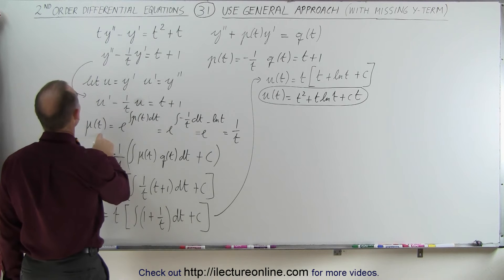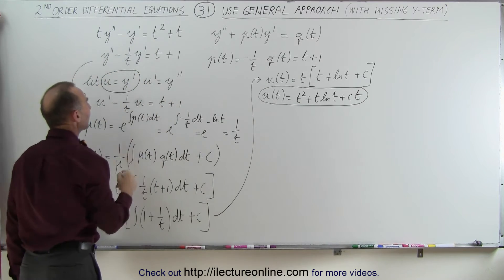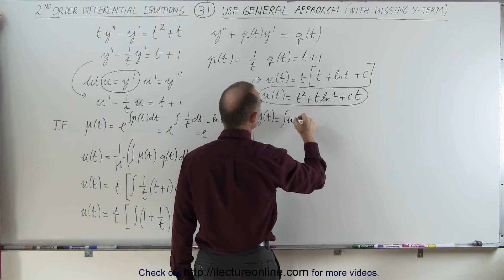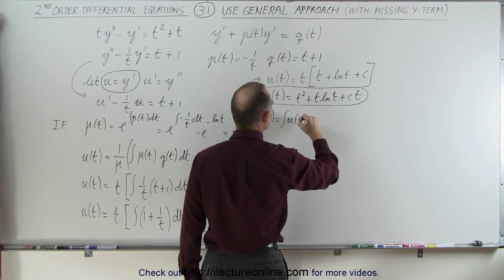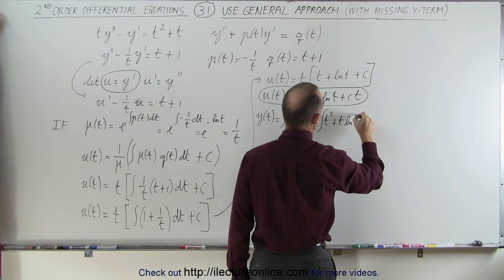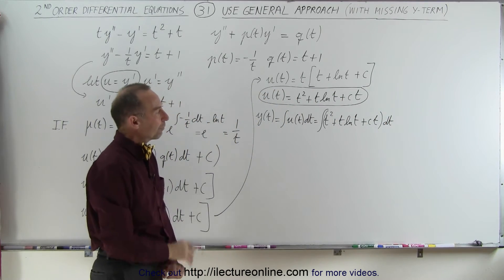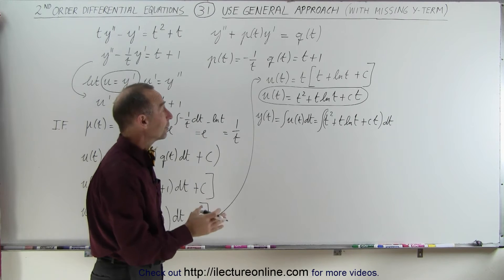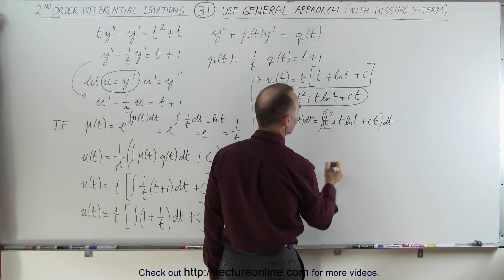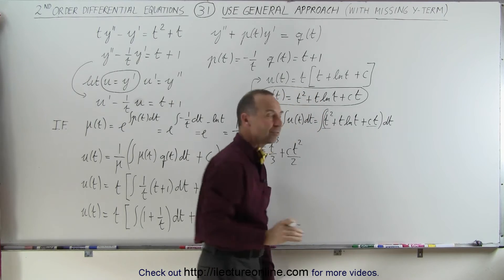We're looking for the solution to the second-order equation, so we go backwards. Since U equals Y prime, Y will be the integral of U. So Y of T equals the integral of T squared plus T times the natural log of T plus C times T, dt. The first and third terms are relatively easy to integrate, giving T cubed over 3 plus C times T squared over 2.